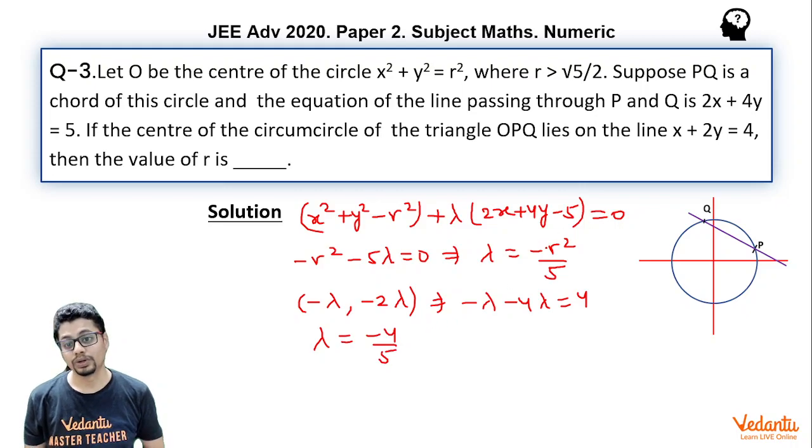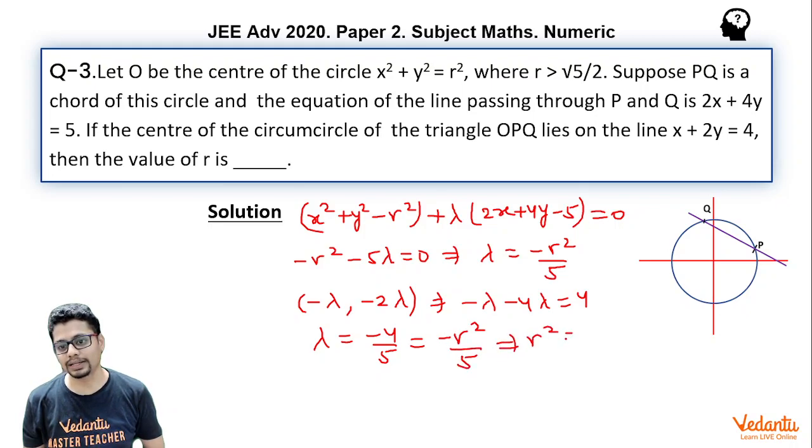And mind you, λ we have already seen is equal to -r²/5. So this essentially means r² = 4. And since r is radius, a distance, it can't be negative, r = 2 is my answer.